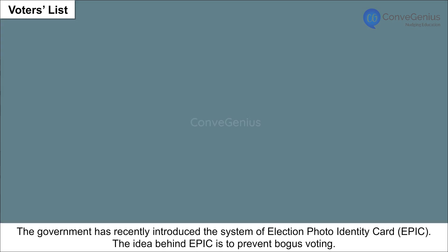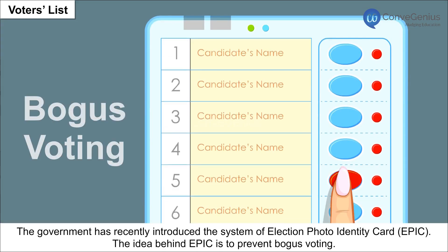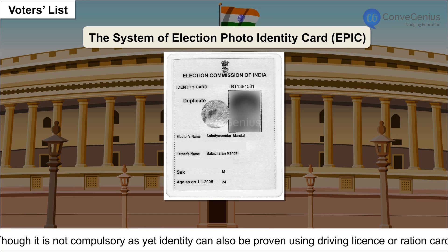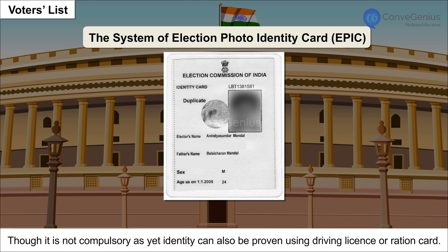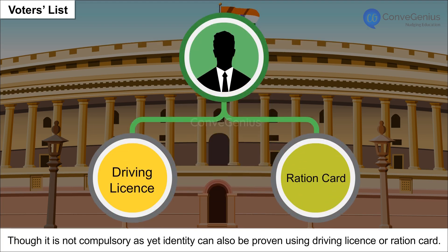The idea behind EPIC is to prevent bogus voting. Though it is not compulsory as yet, identity can also be proven using a driving license or ration card.